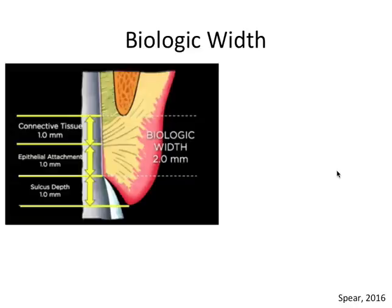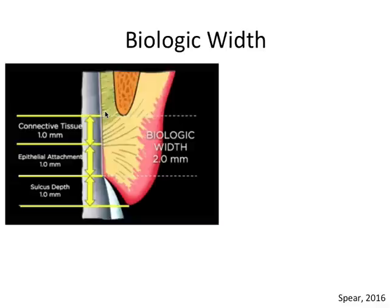So now let's talk about biologic width. Biologic width refers to the attachment of the periodontium to the tooth above the bone. Between the bone and the tooth is the periodontal ligament, but above this is where the connective tissue and epithelial attachments reside.